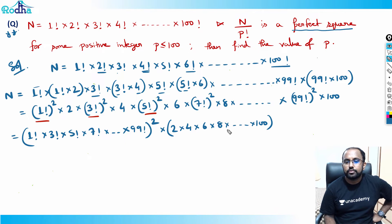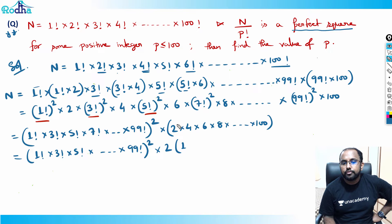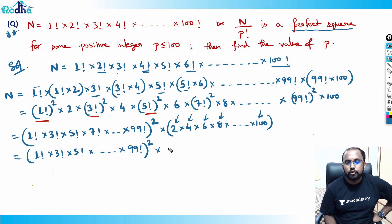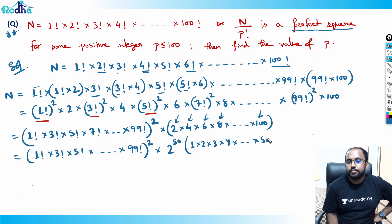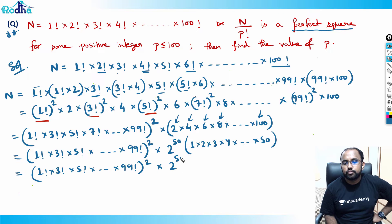Now let's focus on solving 2 into 4 into 6 into 8 till 100. We can take 2 as common from every term — there are 50 such terms — so 2 raised to 50 comes out. What we're left with is 1 into 2 into 3 into 4 till 50. So this becomes: 1 factorial into 3 factorial into 5 factorial till 99 factorial, all squared, multiplied by 2 raised to 50 into 50 factorial.